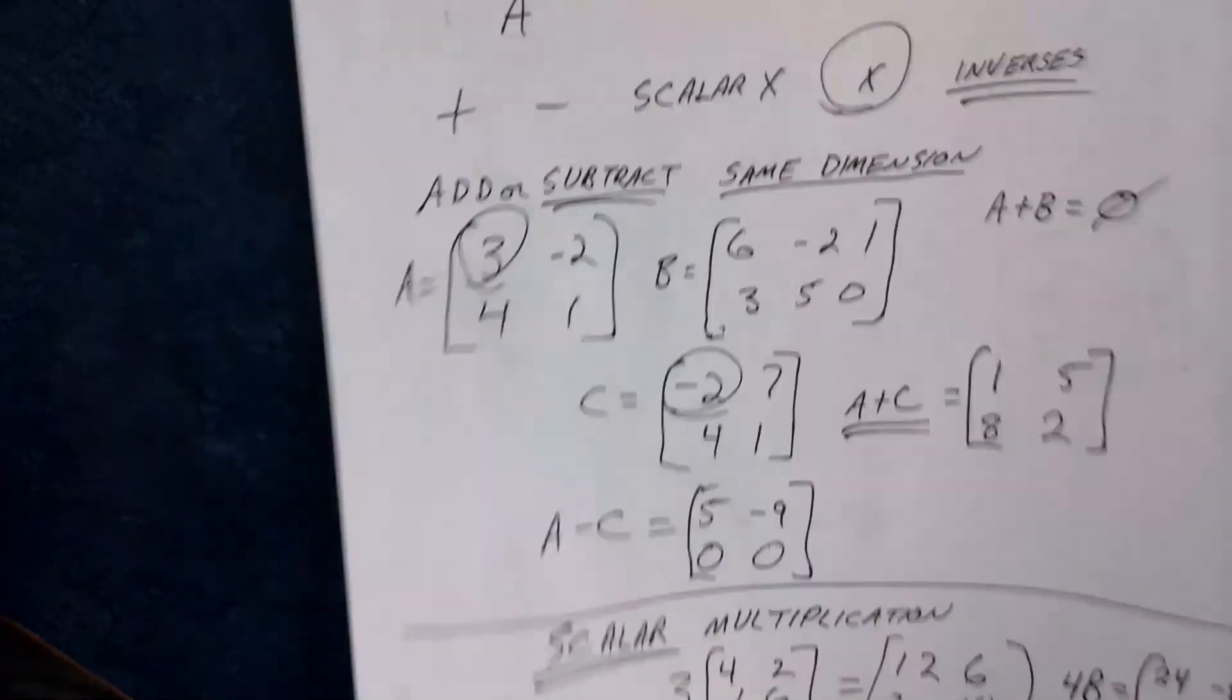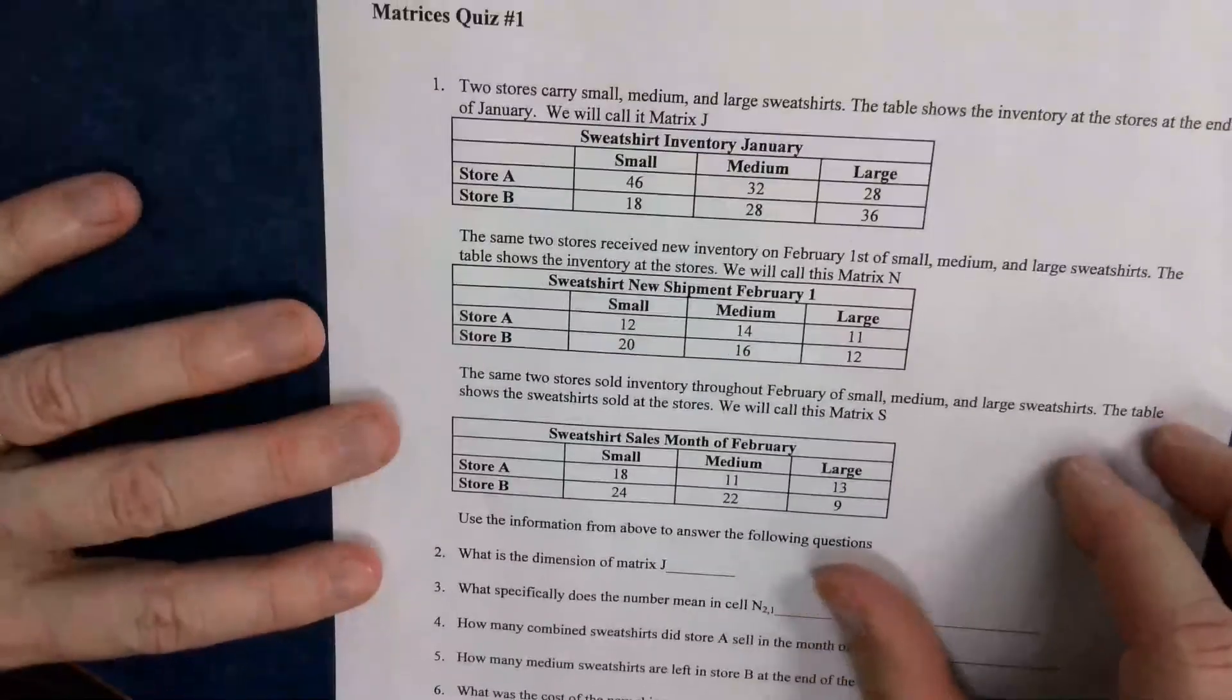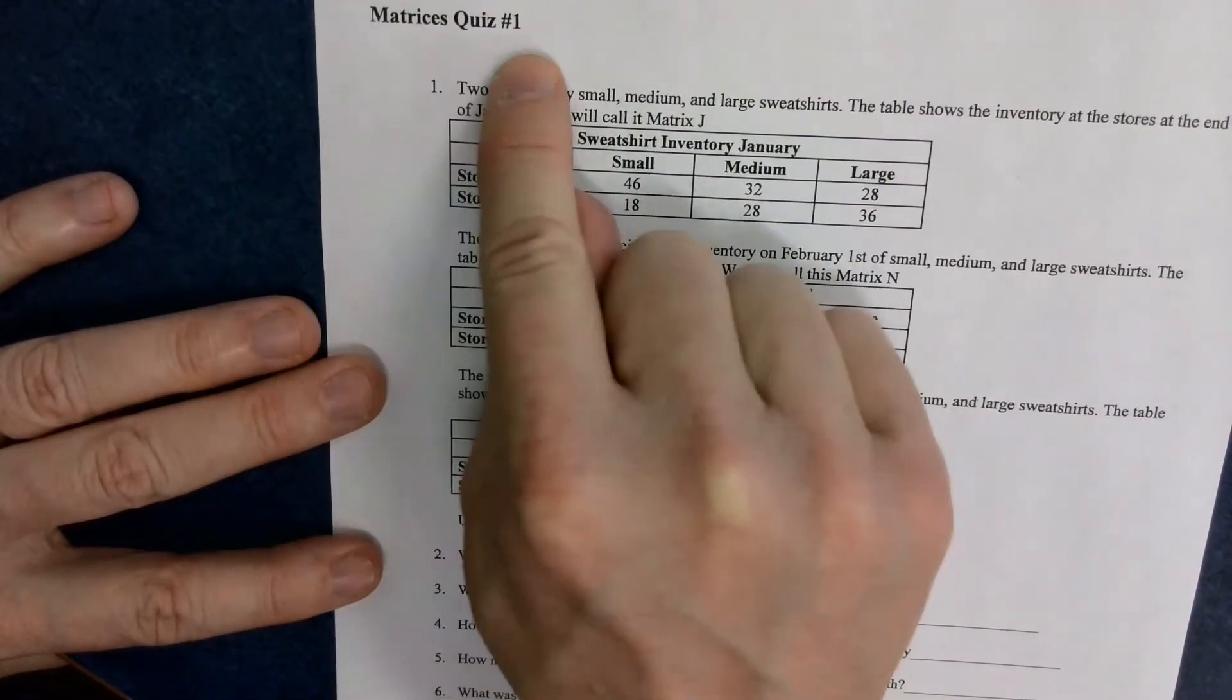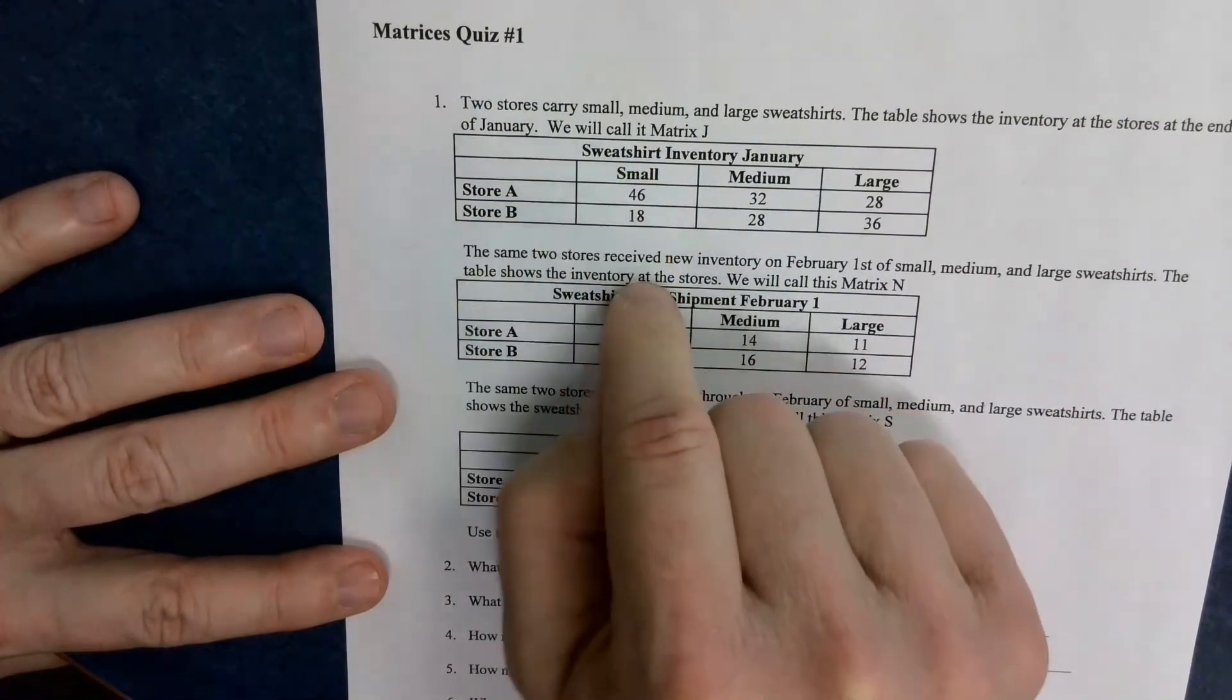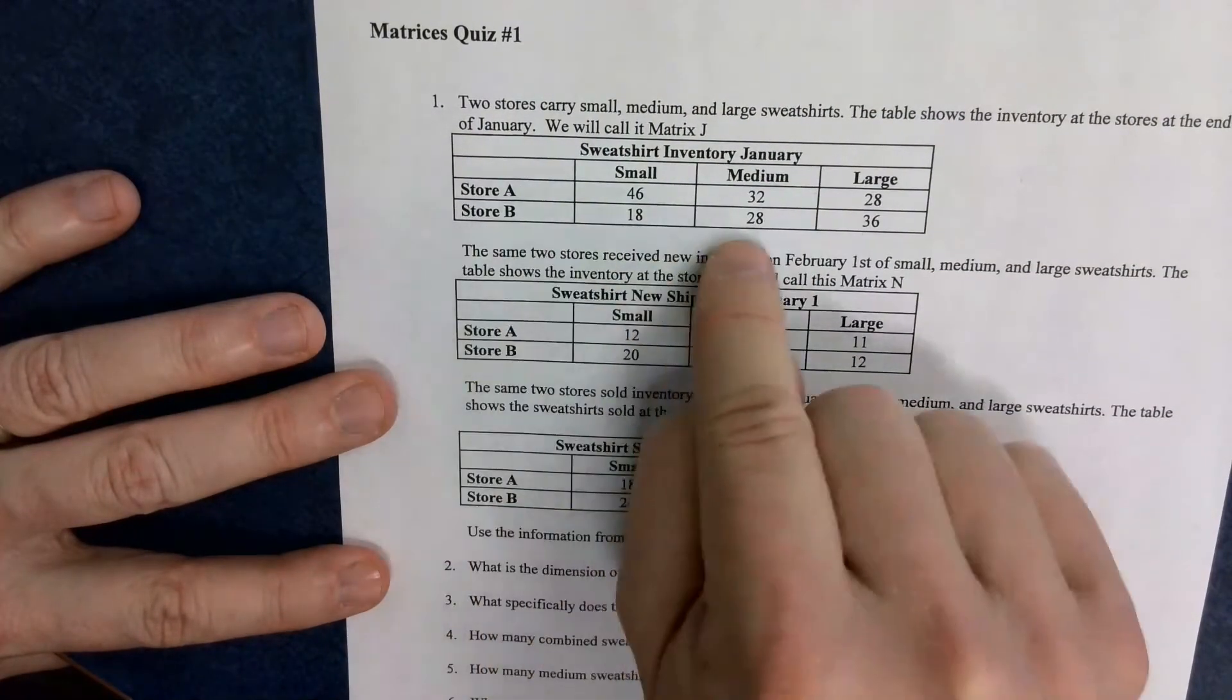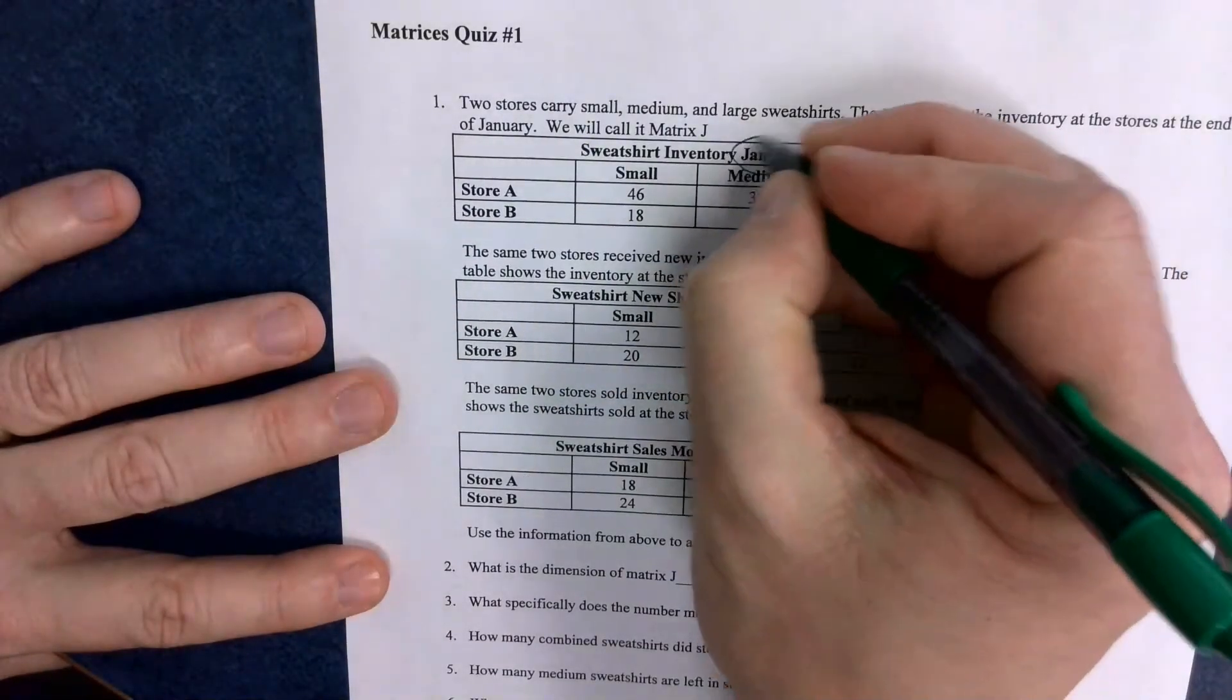So how does this help you do this worksheet? And again, don't start doing this until you know what the heck's going on. So I'm going to kind of talk through this little thing to help you out with it. So first off, kind of explain some things. I know it says quiz number one. You could ignore that. It's not a quiz. But I have two stores, store A and store B that has some sweatshirts in them. And they have small sweatshirts, medium sweatshirts, and large sweatshirts. So when I read this thing, this says store A has 32 medium sweatshirts. Store B has 28 medium sweatshirts. Store B has 36 large sweatshirts. Store A has 28 large sweatshirts.